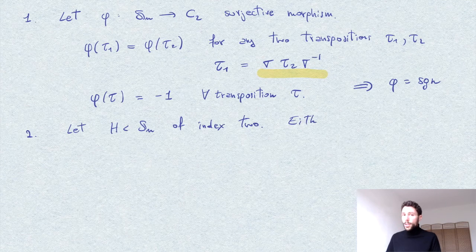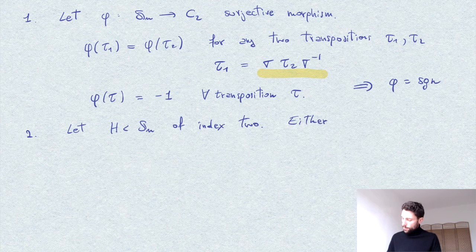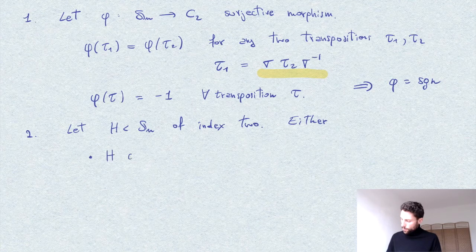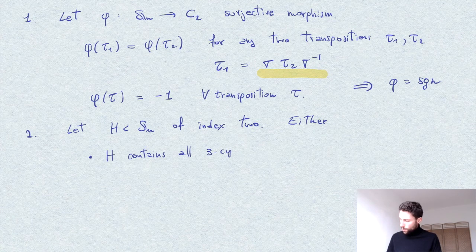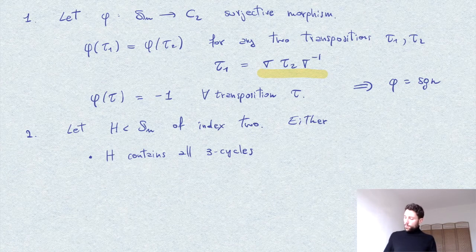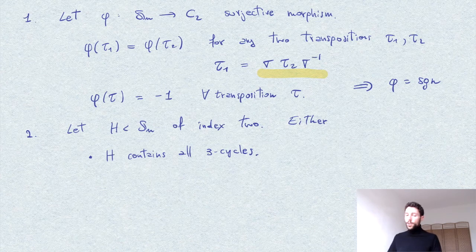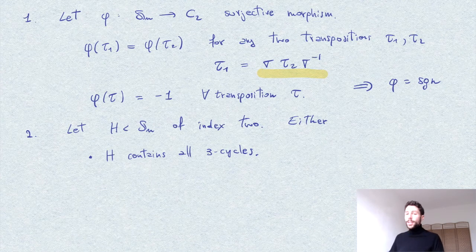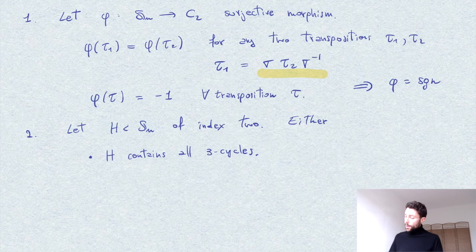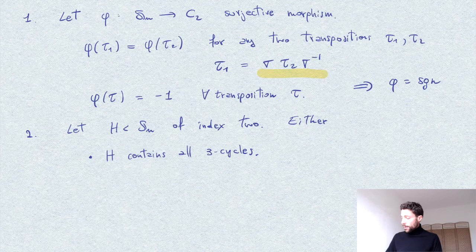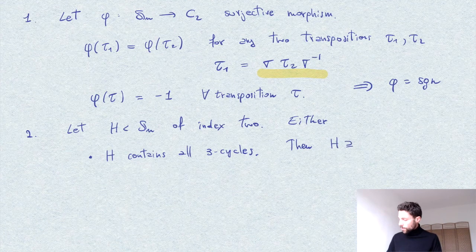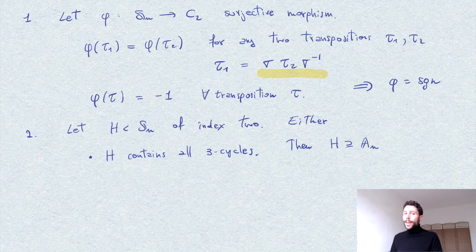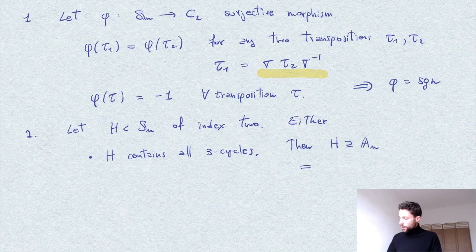Either H contains all the three cycles, or it doesn't. So what happens if H contains all the three cycles? Well, the three cycles generate A_n, so if H contains them all it means that H has to contain A_n. Now H contains A_n and it is also a subgroup of index 2, just like A_n. Therefore H must be equal to A_n.